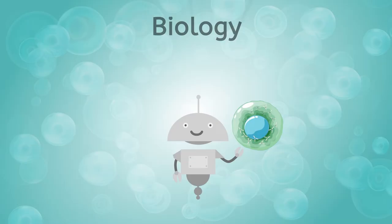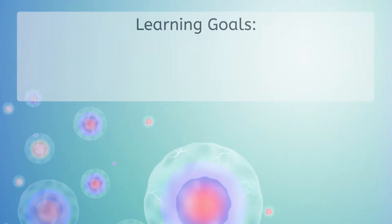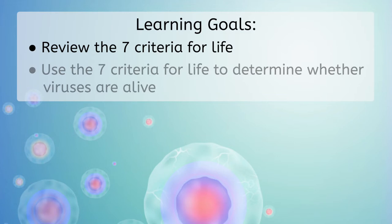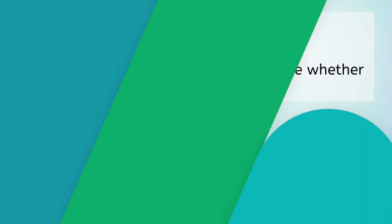As we go through the lesson today we'll review the seven criteria for life and use those seven criteria to determine whether viruses are alive. The first criteria for life is that the object in question must be made of cells.